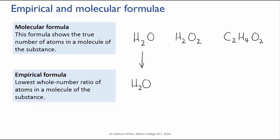But in hydrogen peroxide the ratio of H to O is 2 to 2, which simplifies to 1 to 1. So the empirical formula is HO. Similarly, for acetic acid, all the numbers of atoms in the formula are divisible by 2, so the empirical formula is CH2O.